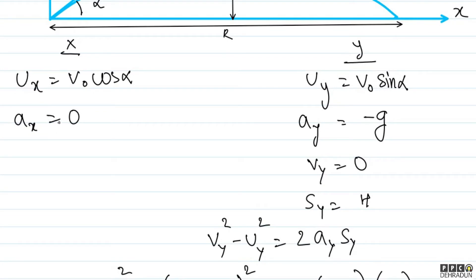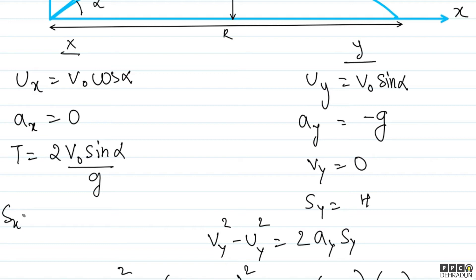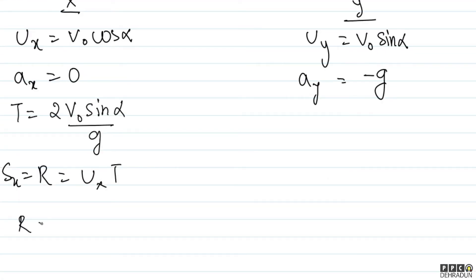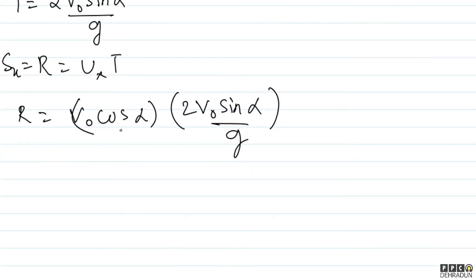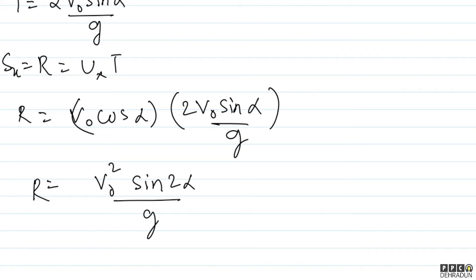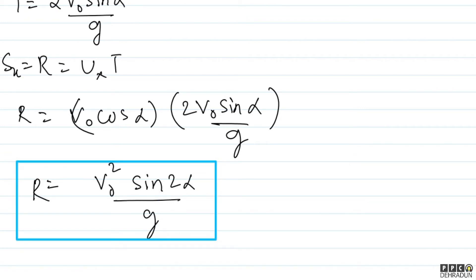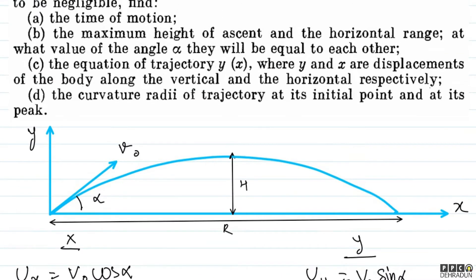Now let's talk about range. For range, we look at the motion along the x-axis, because range is the maximum x-coordinate covered. Since the time of flight is 2v0 sin α / g, and acceleration along x is zero, range = ux × time of flight = v0 cos α × (2v0 sin α / g). Applying the formula 2 sin α cos α = sin 2α, range = v0² sin 2α / g. We derived the range formula by looking at x-direction motion.